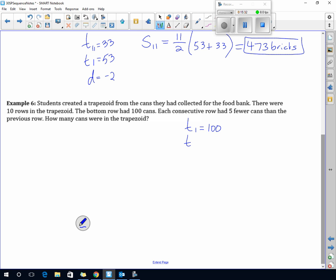How many cans were in the trapezoid? We do know that N is 10. We need to know what that last term is. Not if we want to just find S10. If we use the last formula, we have everything we need to know. So 10 divided by 2, twice the first term, so that would be 200, 2 times 100. And then we have to do 10 minus 1 is 9, 9 times minus 5 is minus 45. So 200 minus 45 is 155, and 155 times 5 is 775 cans.